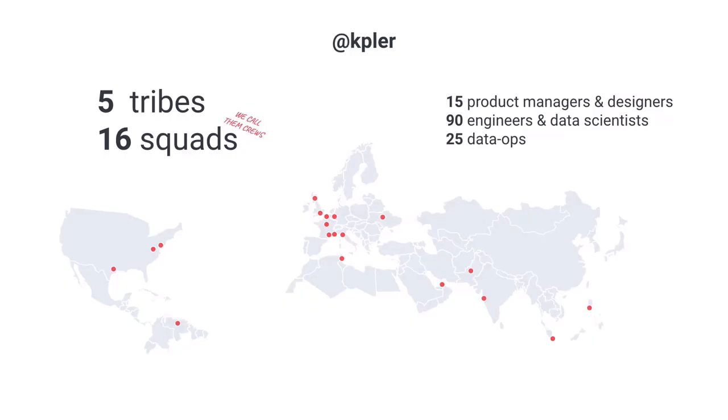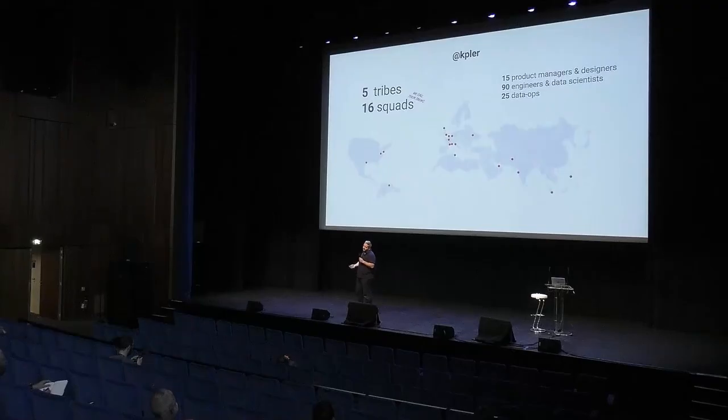Now let's go to the other extreme, where at Kepler, thanks to COVID, we've learned to be truly distributed. We have five tribes or product lines, 16 squads, 15 product managers and designers, more than 80 engineers and data scientists, and also data operation teams and data managers. We call our squads 'crews' — it's in our DNA. The tribes are distributed, but the squads as well, because there is not a single squad that is co-located.